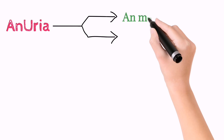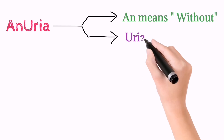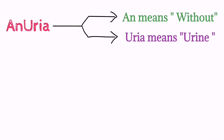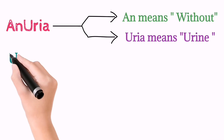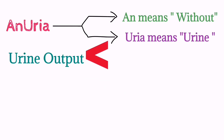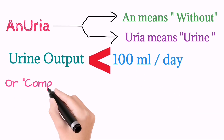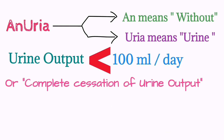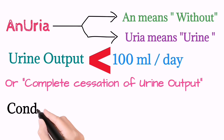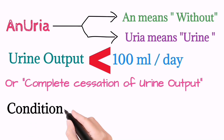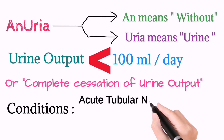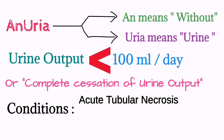Anuria is a condition when there is less than 100 milliliters per day of urine output, or the complete cessation of urine. Conditions related to anuria include acute tubular necrosis, acute glomerulonephritis, and complete urinary tract obstructions.